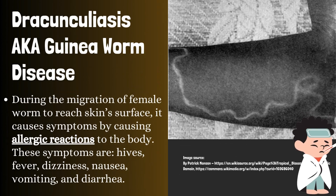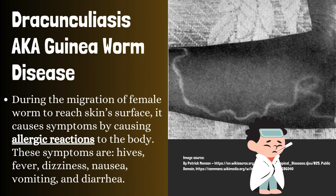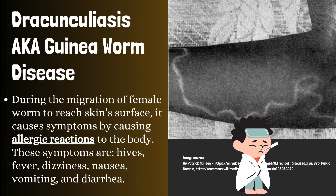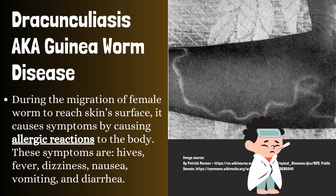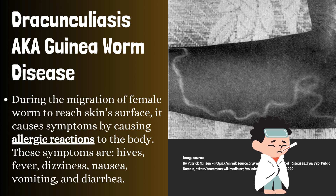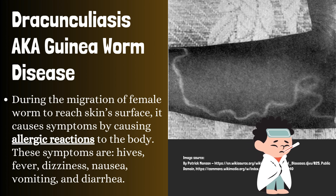What is Dracunculiasis? It is also known as guinea worm disease. During the migration of the female worm to reach the skin surface, it causes symptoms by triggering allergic reactions in the body. These symptoms are: hives, fever, dizziness, nausea, vomiting, and diarrhea.